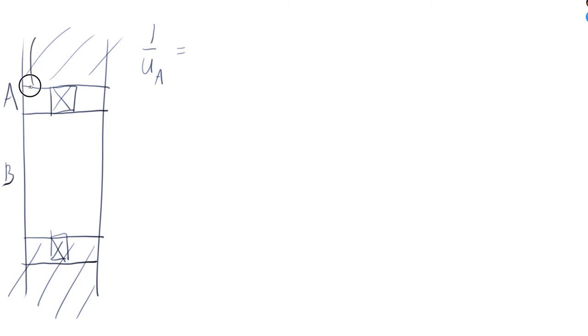So let's call this bit here U_GW and this bit's wood. Let's call this U_W. So 1 over U_A is 1 over U_GW plus 1 over U_W plus another 1 over U_GW.